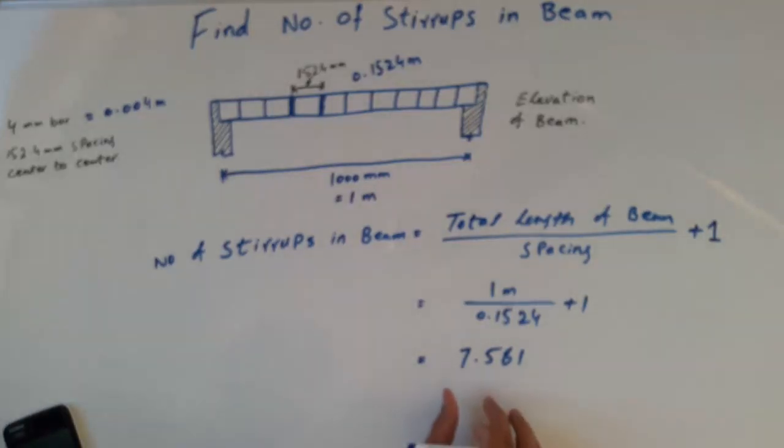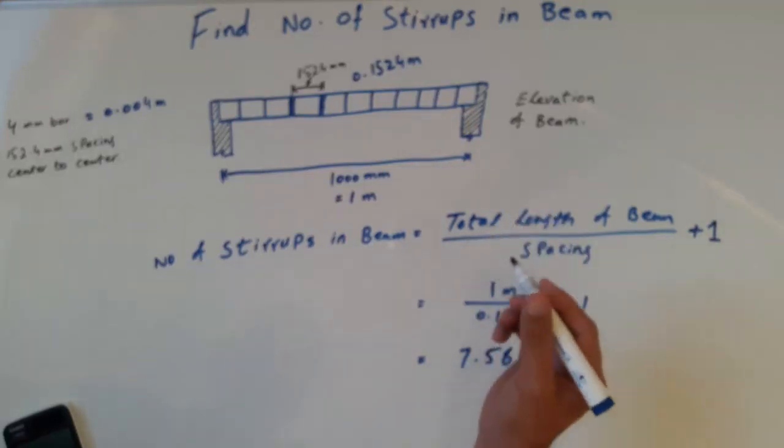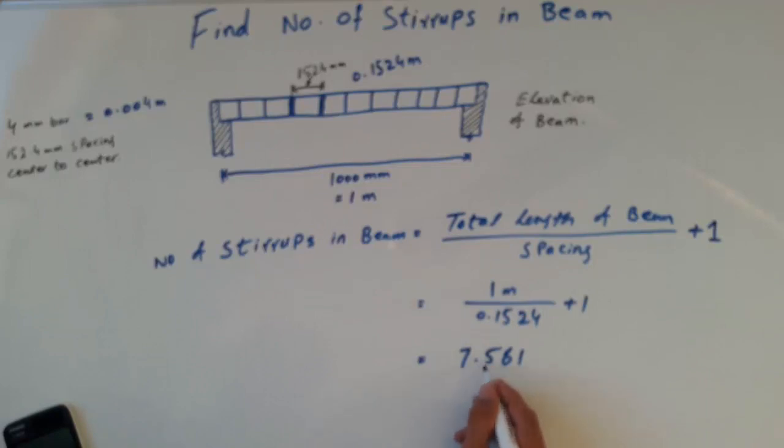We haven't got a whole number, we have a number with a fraction. So what we do is round it up to 8.